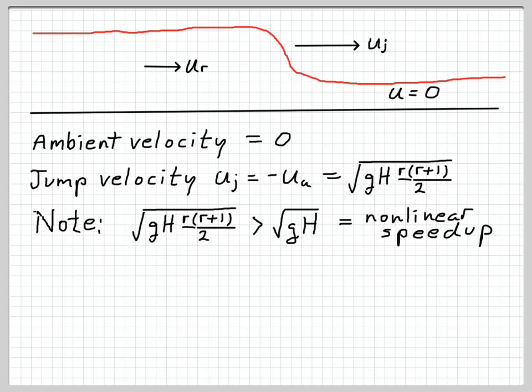An interesting thing to notice about this speed is that it's greater than the linear long wave speed. When you have small amplitude waves so that the equations can be linearized, the fastest speed that a wave can go is the linear long wave speed, square root GH. But in this case, we have something greater than the square root of GH. This is the phenomenon of non-linear speed-up. When waves have finite amplitude rather than infinitesimal amplitude, they can go faster than small amplitude waves.